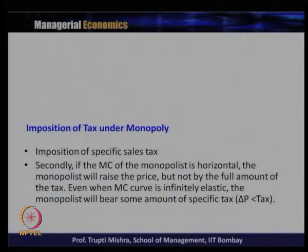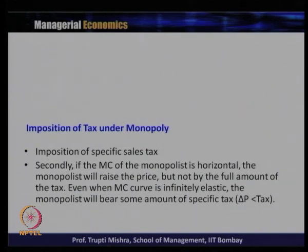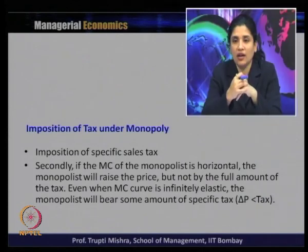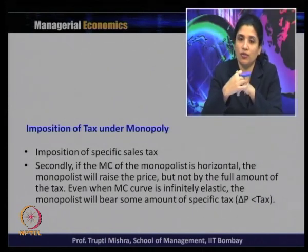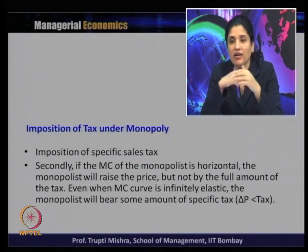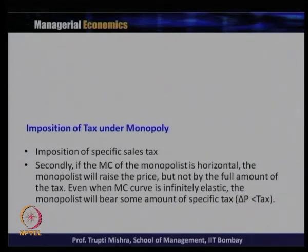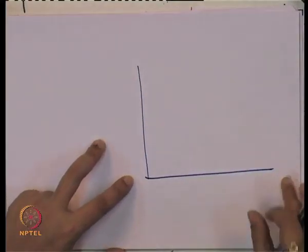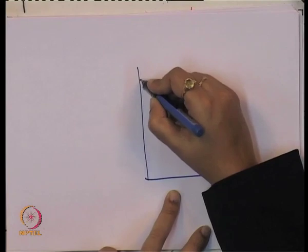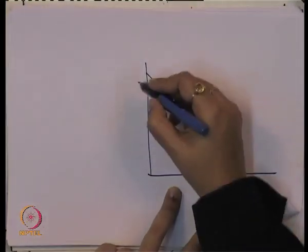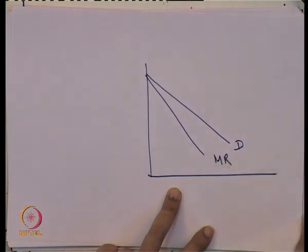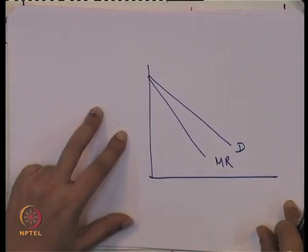In the second case, the marginal cost of the monopolist is horizontal — parallel to the x-axis. The monopolist will raise the price, but not by the full amount of the tax. Even if the marginal cost curve is infinitely elastic, the monopolist will bear some amount of the specific tax. Even with a horizontal MC curve, the change in price is less than the tax — the monopolist is not passing all the tax burden to the consumer.